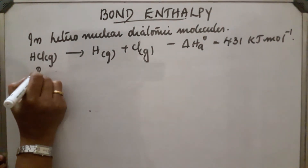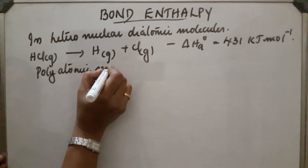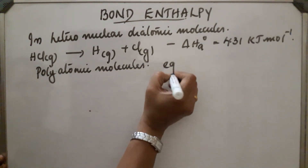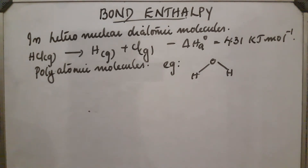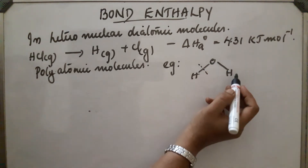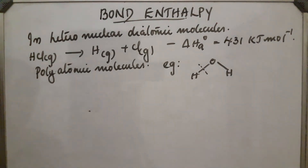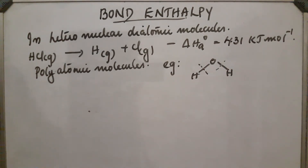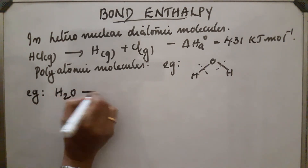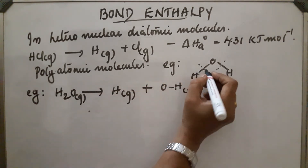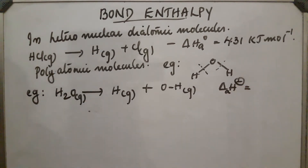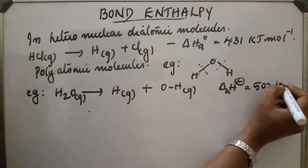In the case of polyatomic molecules, take the example of H2O. Here we have to consider two types of bonds because the environment of the first O-H bond is different from the second. After the breakage of the first bond, only the OH bond remains, and that environment is different. The bond dissociation energy of the first O-H bond is found to be 502 kilojoule per mole.